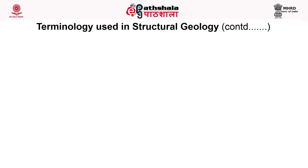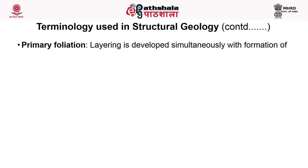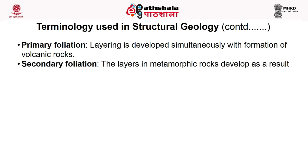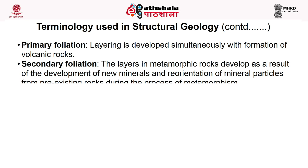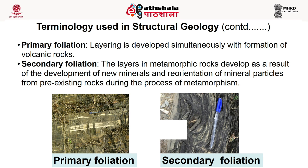What is primary foliation? Layering which is developed simultaneously with the formation of volcanic rock is known as primary foliation. In the photograph you can see the layering which is developed due to the formation of volcanic rocks. Secondary foliation refers to layers in metamorphic rocks developed as the result of development of new minerals and orientation of mineral particles from pre-existing rocks during the process of metamorphism. In this photograph, you can see secondary foliation which is parallel to the pen kept on the outcrop.